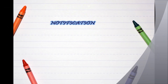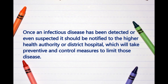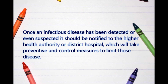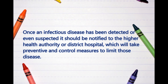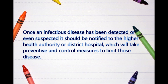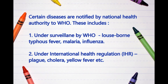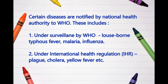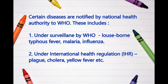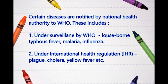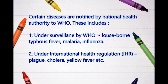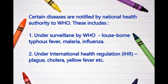Notification: We notify the infectious disease once it is detected or even suspected to a higher health authority or district hospital, which will take preventive and control measures to limit the disease. Certain diseases are notified by the National Health Authority to WHO. These include, under WHO surveillance: louse-borne typhus fever, malaria, and influenza. Under IHR, those include plague, cholera, etc.